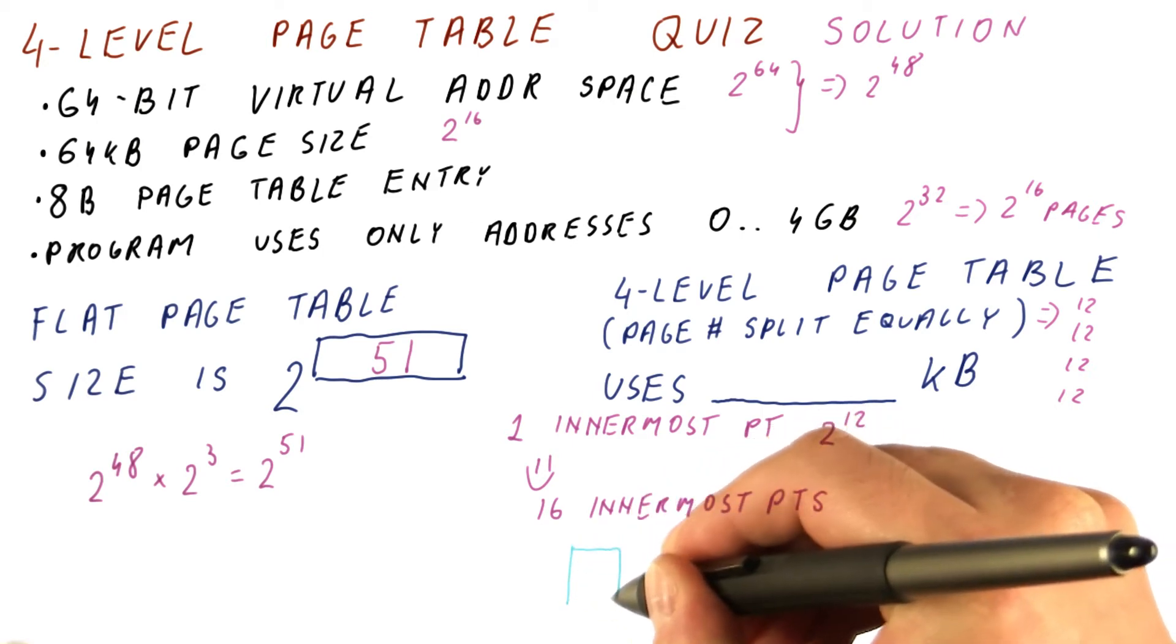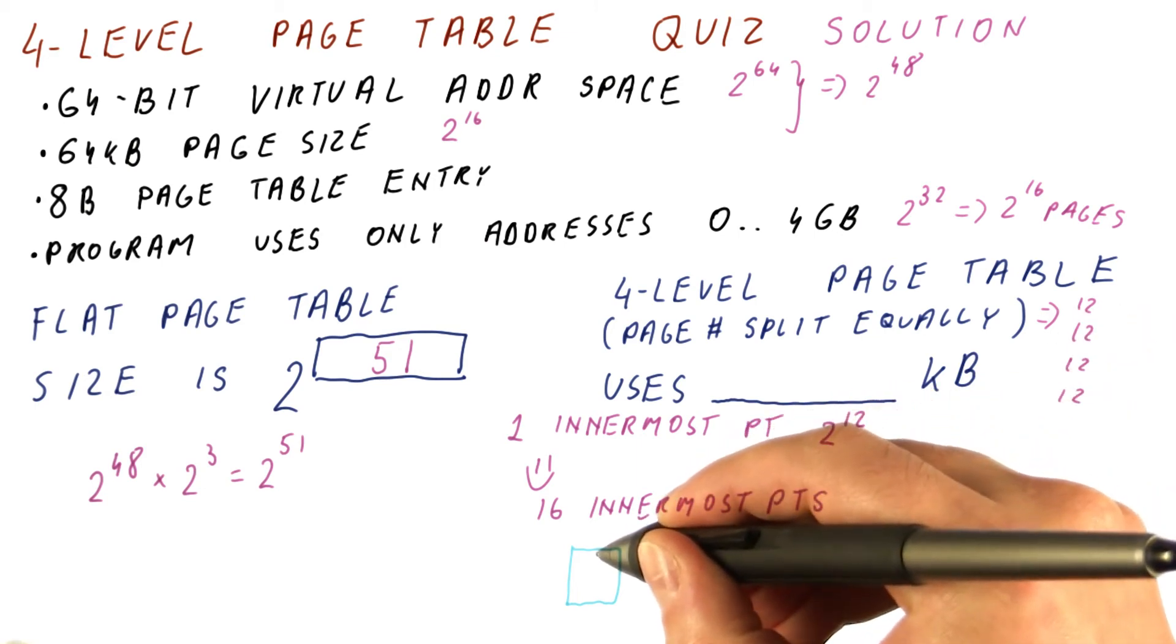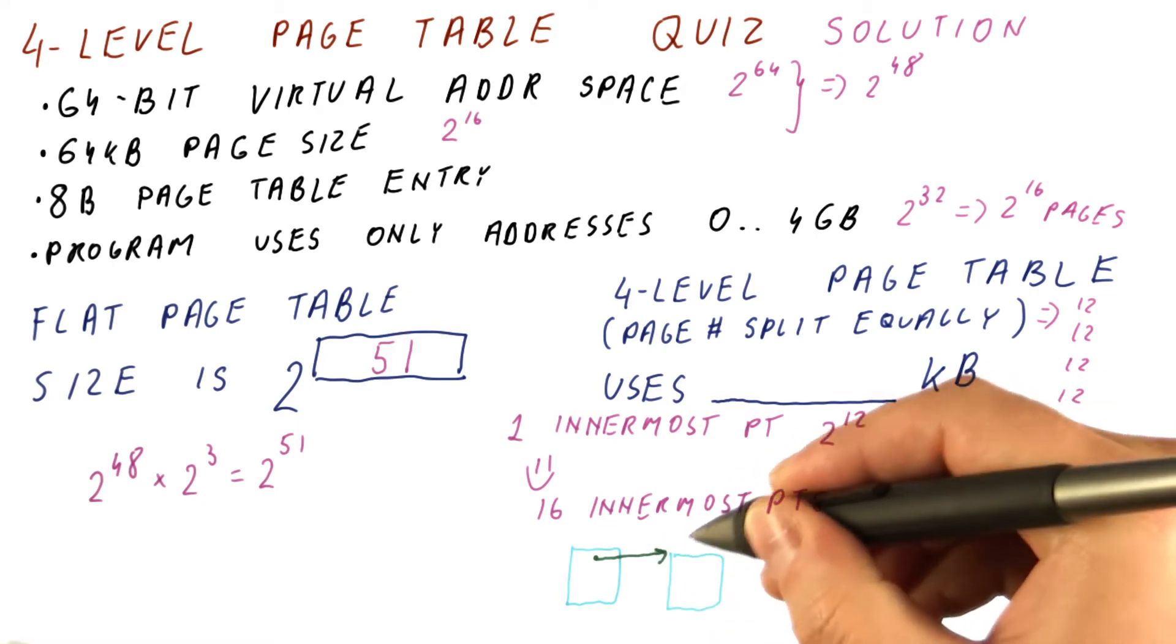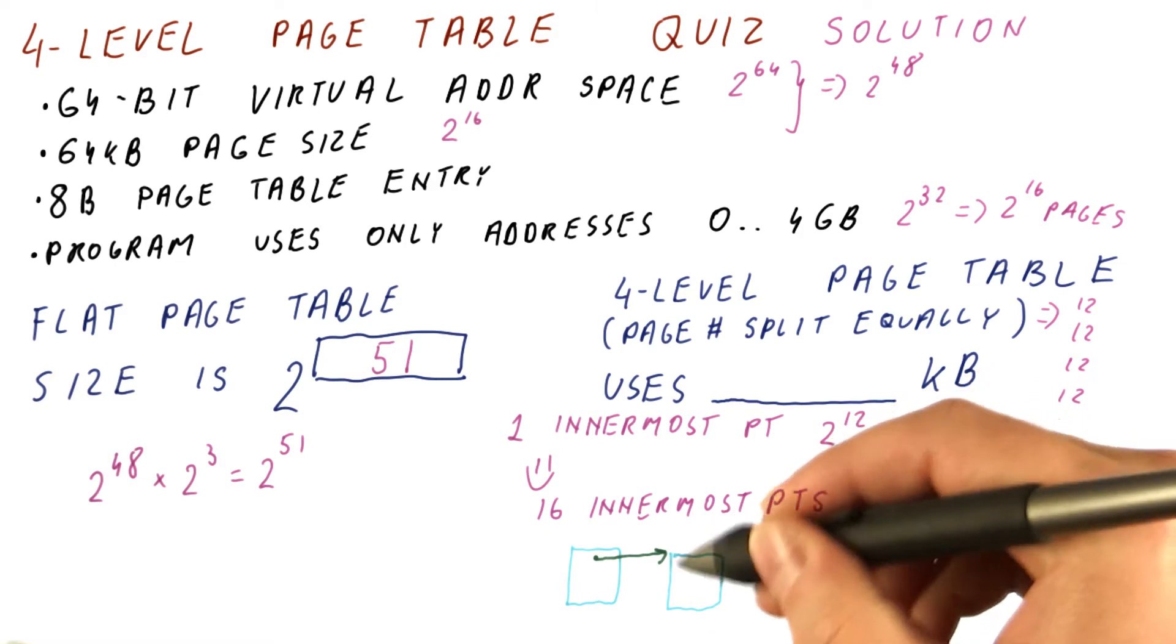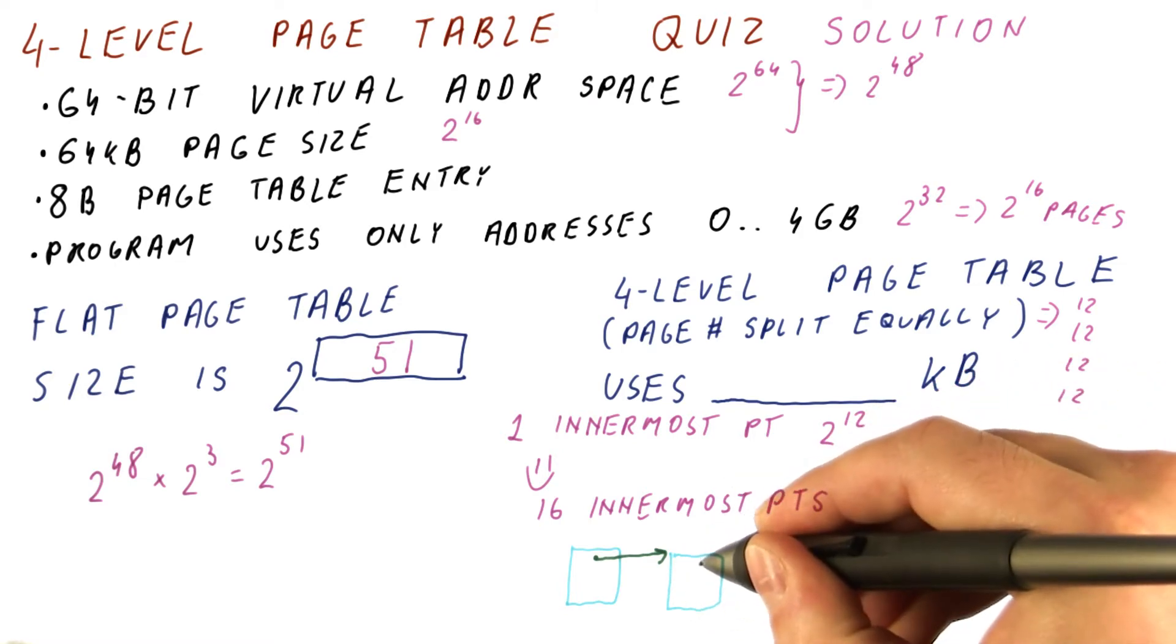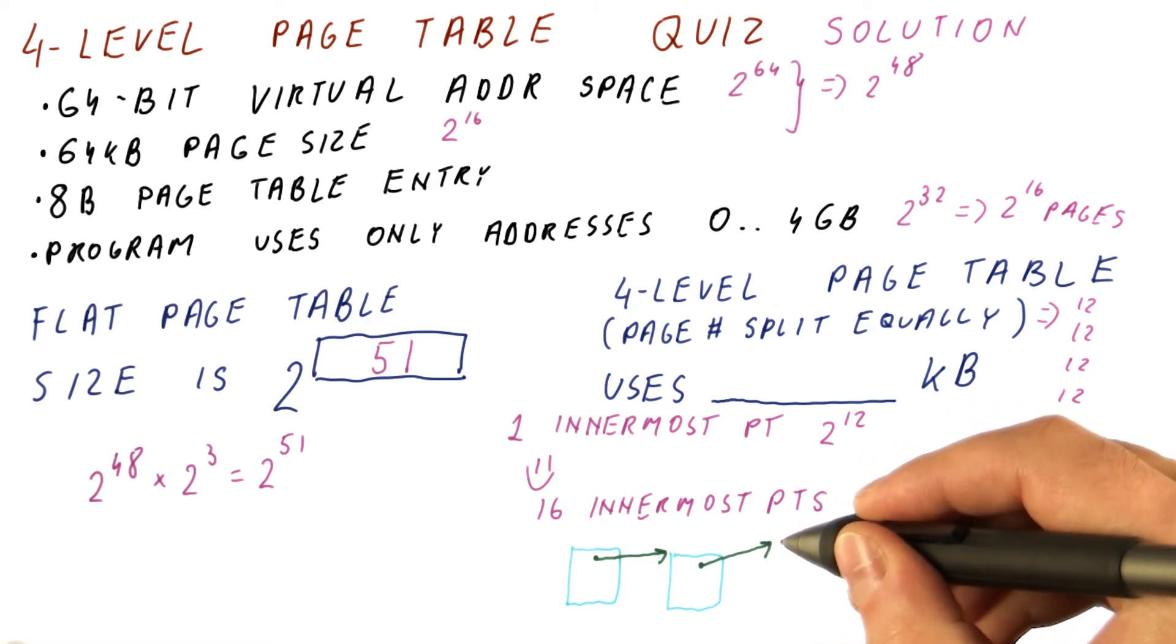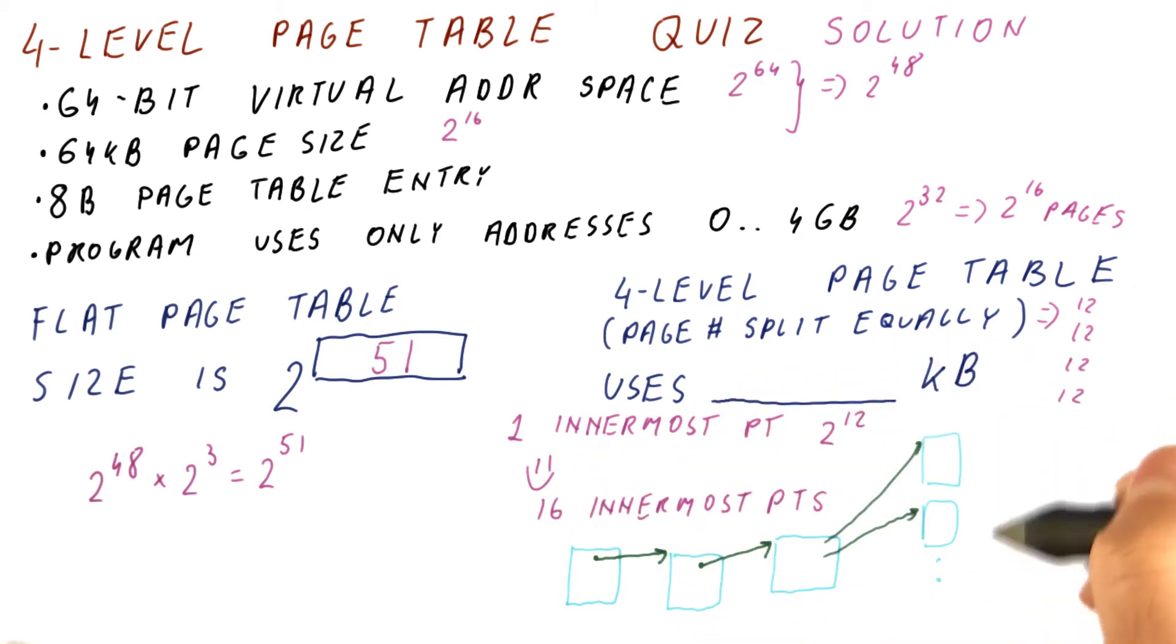The outermost page table has 2 to the 12th, or 4,096 entries. But only one of them, the first one, actually has a page table at the next level. That page table at the next level also has 2 to the 12th entries. But only one of them, the first one, points to the next level of page table. That next level page table has 16 entries that point to innermost page tables.